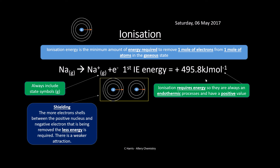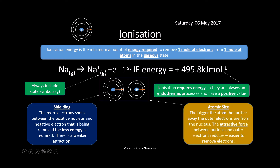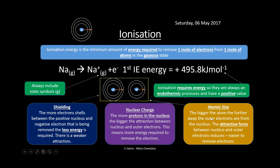The key thing here is shielding — the protection of inner electron shells from the nucleus to the outer electron. The more electron shells between the positive nucleus and the outer electron being removed, the less energy is required because there is a weaker attraction. Atomic size is also important — bigger atoms mean a bigger distance between the positive nucleus and the outer electron, so electrons are lost more readily. However, nuclear charge — more protons in the nucleus means a bigger attraction, requiring more energy to remove the electron. As we go down groups, shielding overrides nuclear charge and has a much bigger impact on ionization energy.